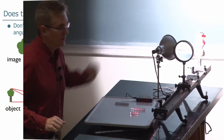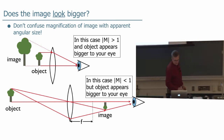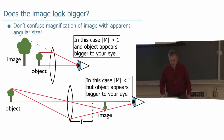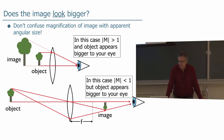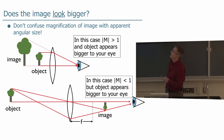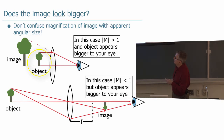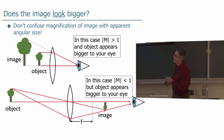The size of the image is much bigger than the actual object — that's what we mean by magnification mathematically. But you shouldn't confuse the magnification of the image with the apparent angular size. It only looks bigger to you if it has a bigger angle relative to your eye. Consider an object half a focal length away from the lens — the image created is twice as large, and with the lens between the object and your eye, it looks bigger with a bigger angular size.